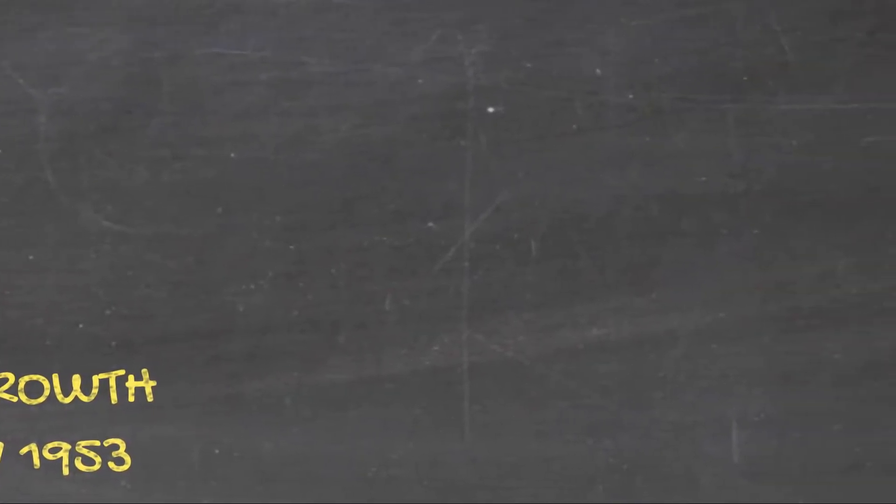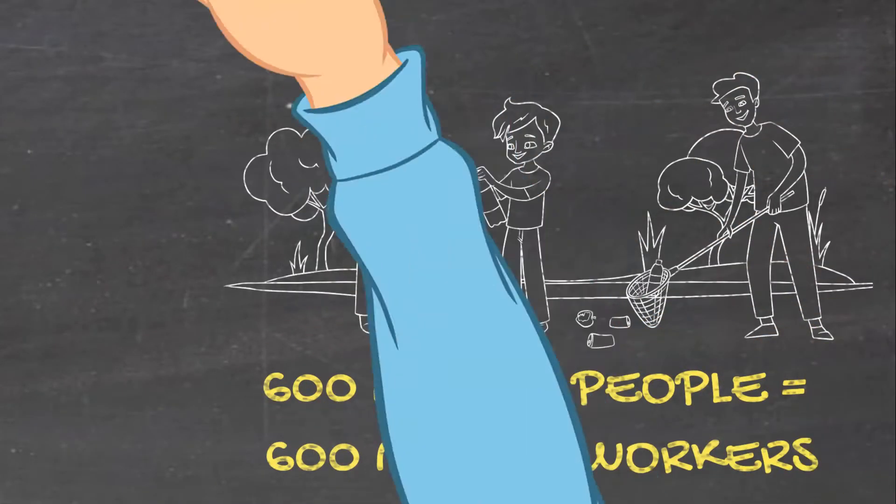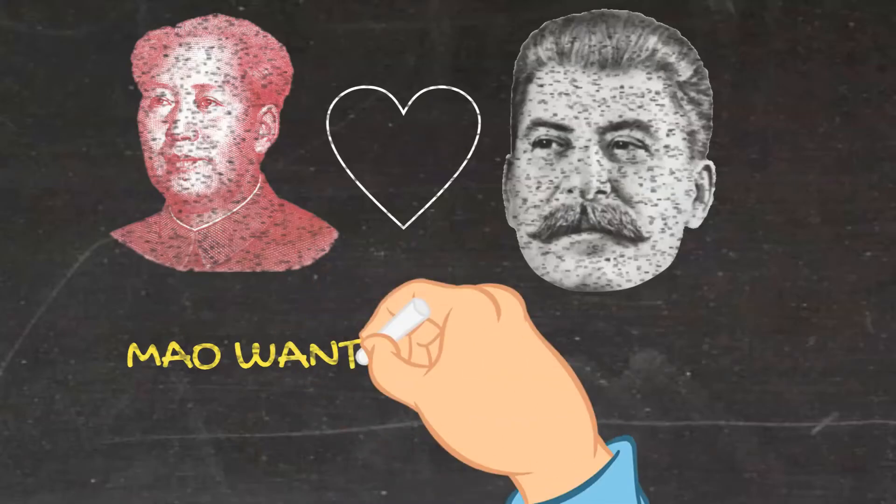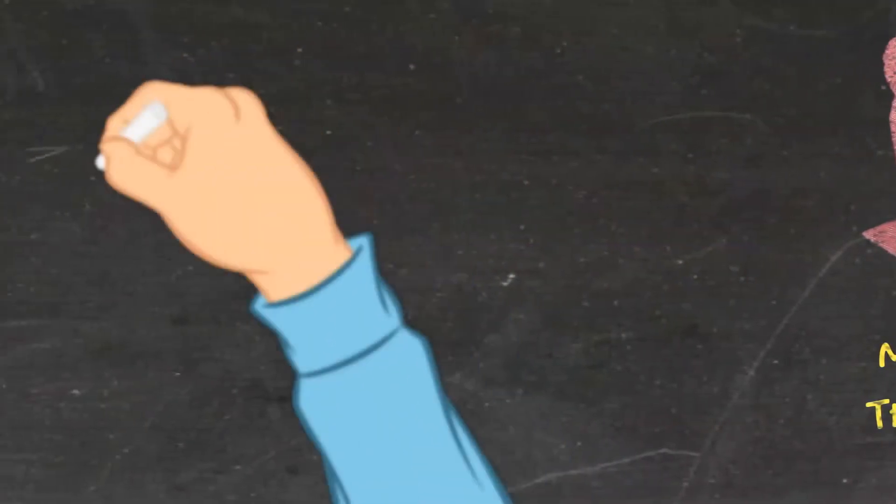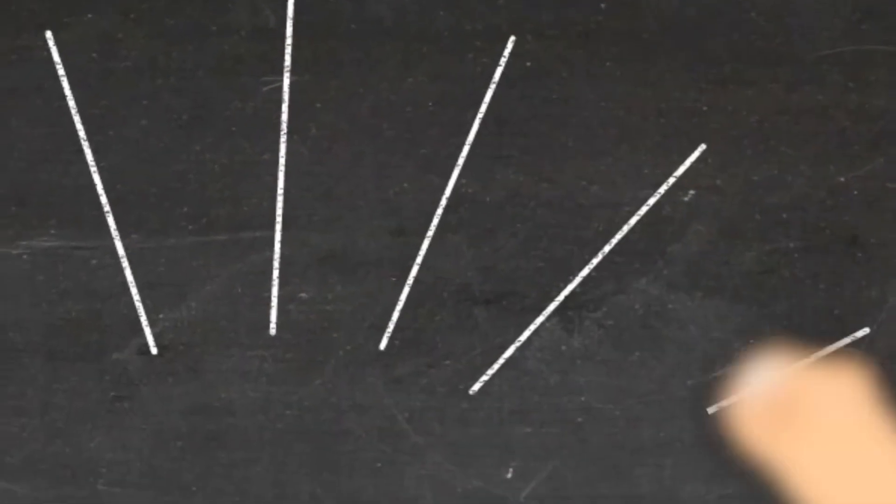Luckily, this massive population would serve as the primary resource for such a transformation, and the apparent success of Stalin's five-year plans served as Mao's inspiration, who hoped to emulate them in China. A successful five-year plan would also have the added benefit of consolidating the power of Mao and the CCP, the importance of which cannot be overstated.